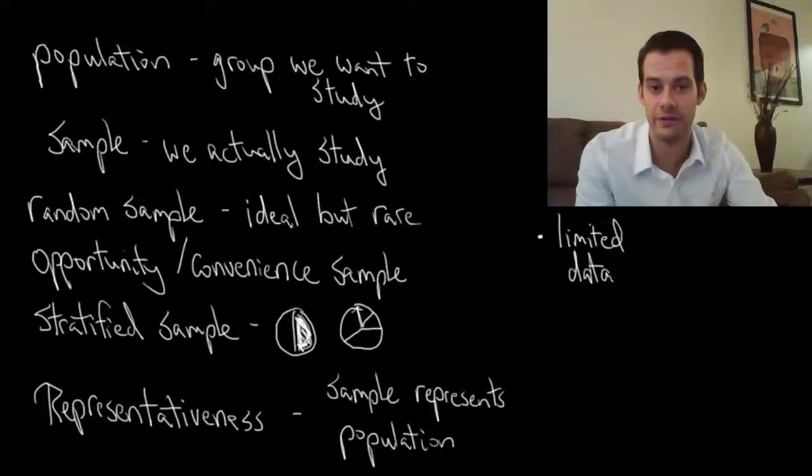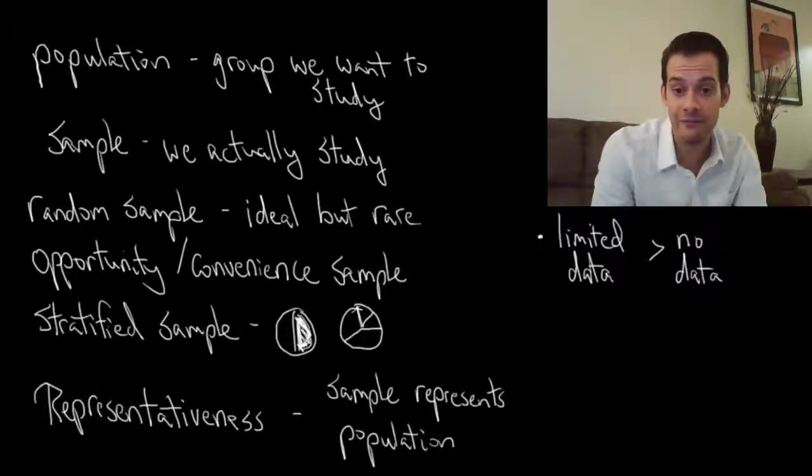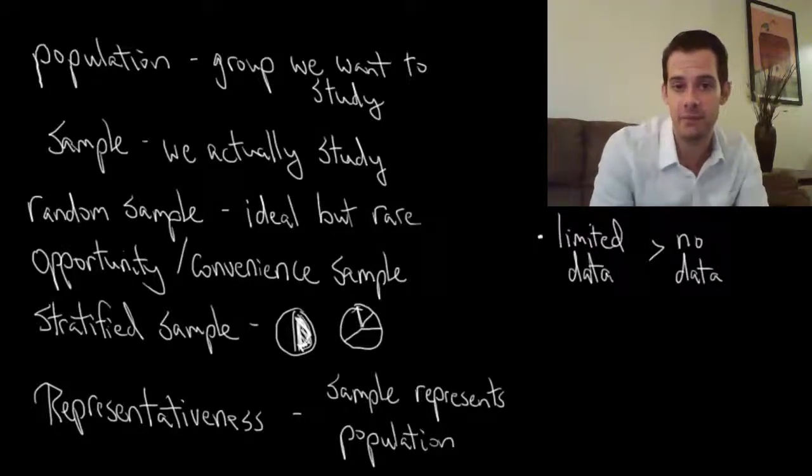We say that okay, you've got limited data if you have a non-representative sample. But limited data is better than no data. We'd rather have some information about a non-representative sample, we might find an interesting effect here. That's better than not having any information at all.